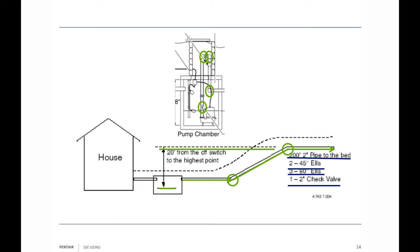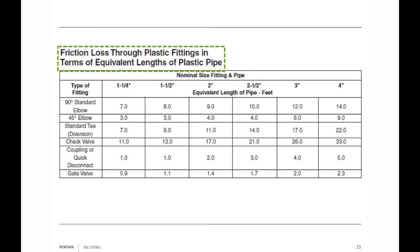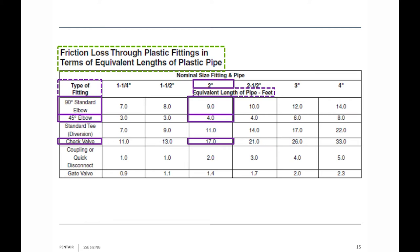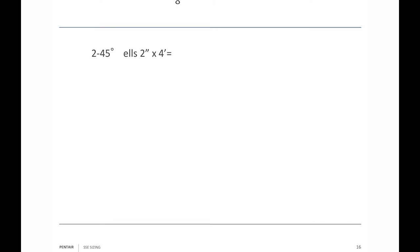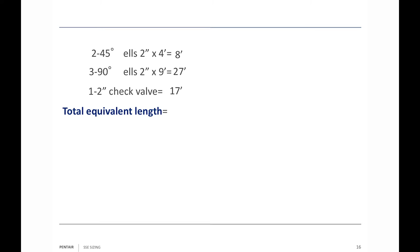From the off switch to the highest point we have to pump the water is 20 feet. Using the friction loss through fittings table — equivalent length of pipe — a standard 90° two-inch fitting equals 9 feet of straight pipe; a 45° two-inch equals 4 feet; a check valve equals 17 feet. Two 45s = 8 feet, three 90s = 27 feet, one check valve = 17 feet. Total equivalent pipe length for fittings: 52 feet.